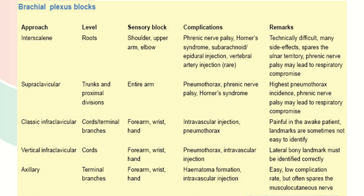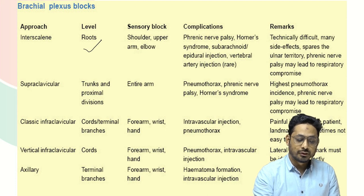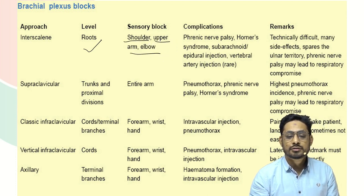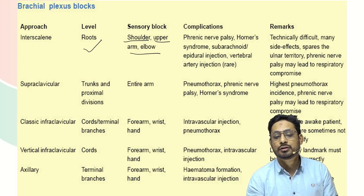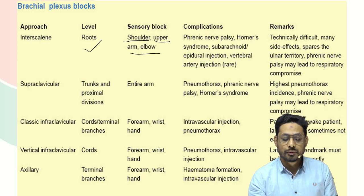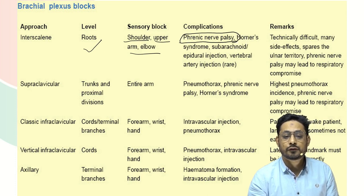All the options are types of brachial plexus block. The question was which block causes pneumothorax, so let us review the complications from this table. First is interscalene block, which blocks at the level of the root. It is used for shoulder, upper arm, and elbow. Since the interscalene block is given at the highest point — the level of the root — it is used for surgeries of the shoulder and proximal upper limb. The most important complication to remember is that interscalene block causes phrenic nerve palsy. This is an important question for future exams.